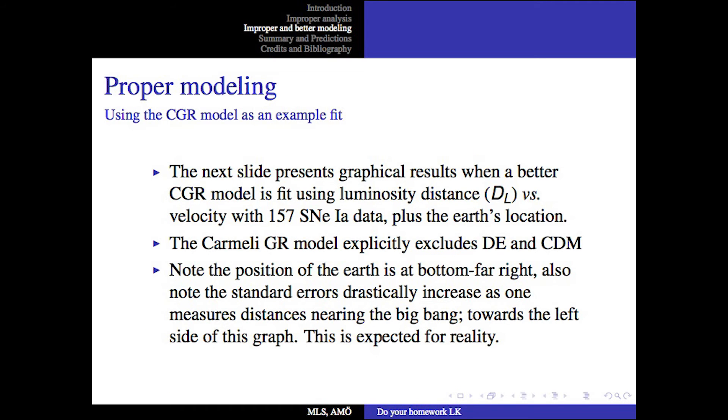Proper modeling. The next slide presents graphical results when a better Carmeli general relativity model is fit using the luminosity distance versus velocity with the gold data plus the Earth's location. This Carmeli general relativity model explicitly excludes dark energy and cold dark matter. Note, the position of the Earth is at the bottom far right, but we have a position for the Earth.